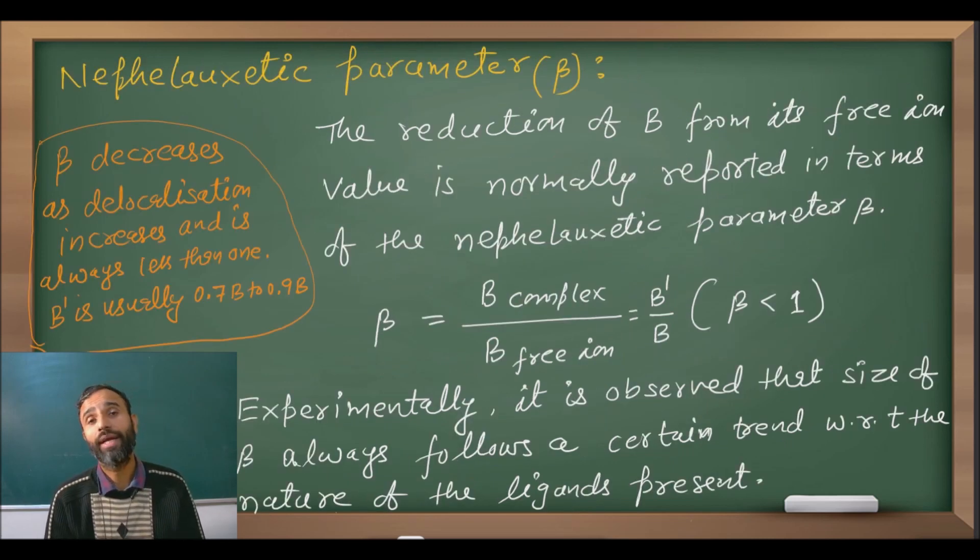Now nepheloxetic parameter is defined as the ratio of B, Racah parameter in the complex divided by Racah parameter of free metal ion. B dash divided by B, and you know B dash is always less than B because of the delocalization. Therefore beta is always less than 1, and its value ranging from 0.7 to 0.9. Beta decreases as delocalization increases.